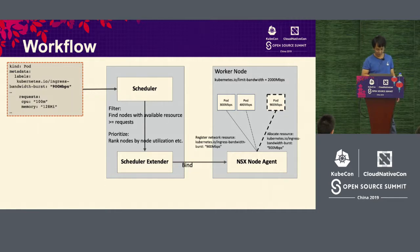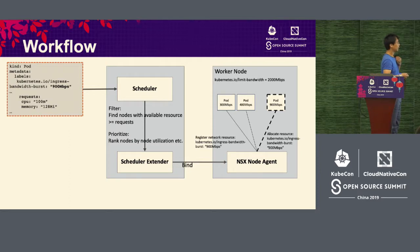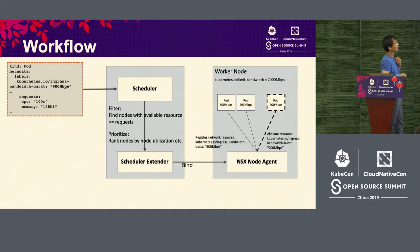The core principle is to manage the ingress and egress bandwidth of the node. When a user requests a pod — in addition to CPU and memory — they can add bandwidth requirements in the metadata. The scheduler finds the scheduler extender, which first excludes nodes with unavailable resources, scores the remaining nodes, selects the node with the highest score, and binds the pod to it. Then the NSX node agent watches the switch, registers the pod, tells it how much bandwidth it needs, and reserves the bandwidth in the virtual switch.